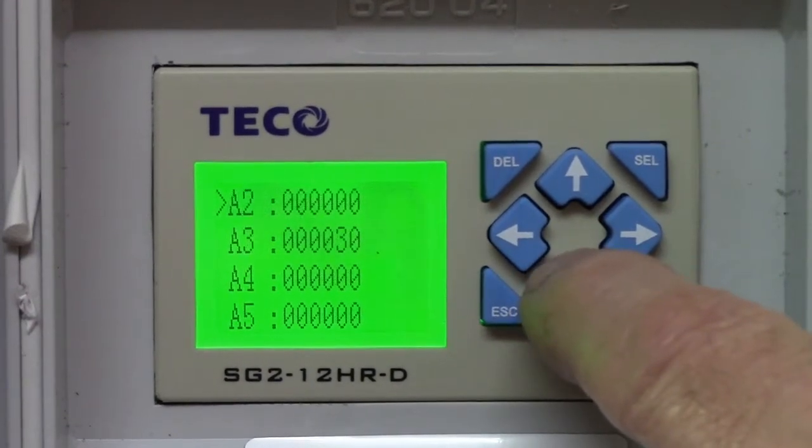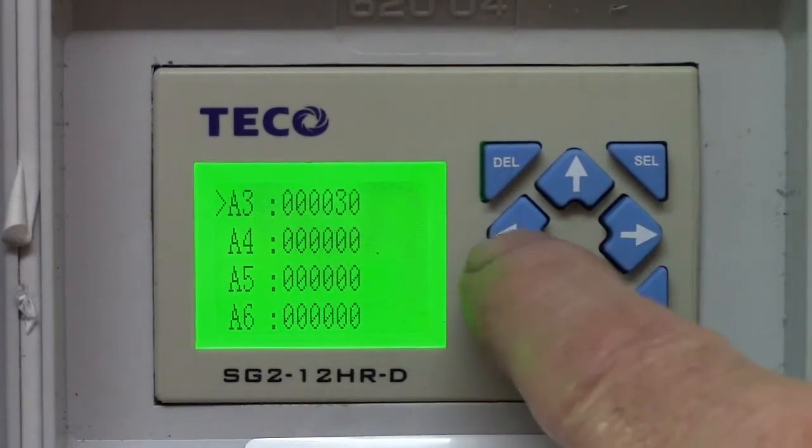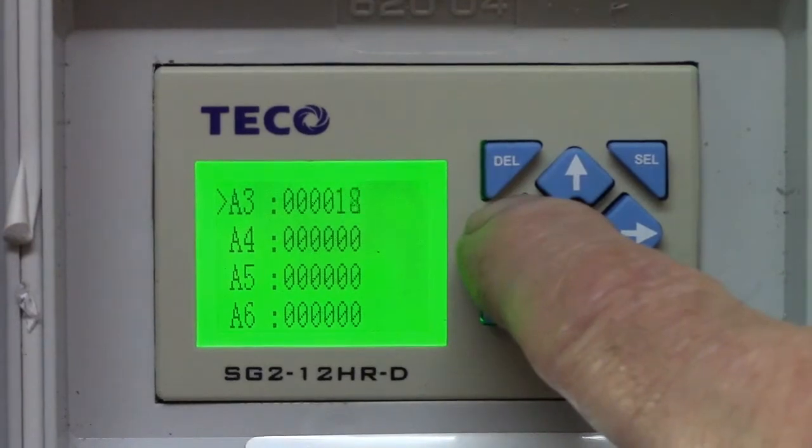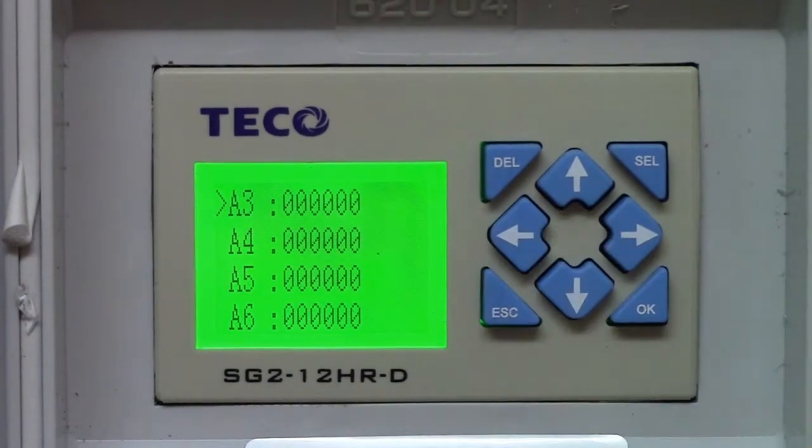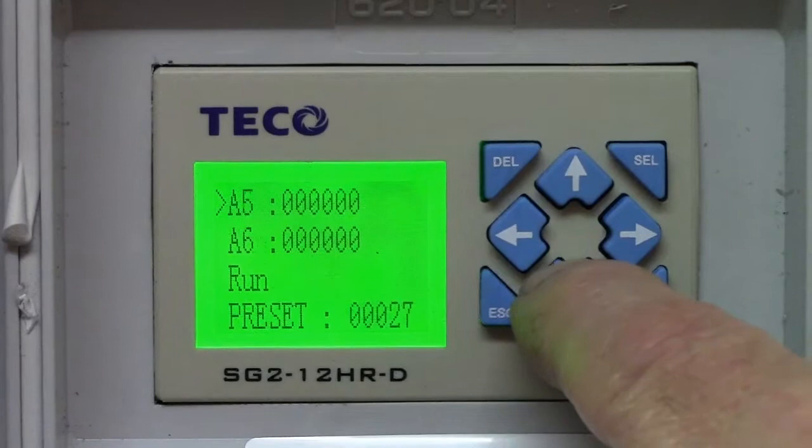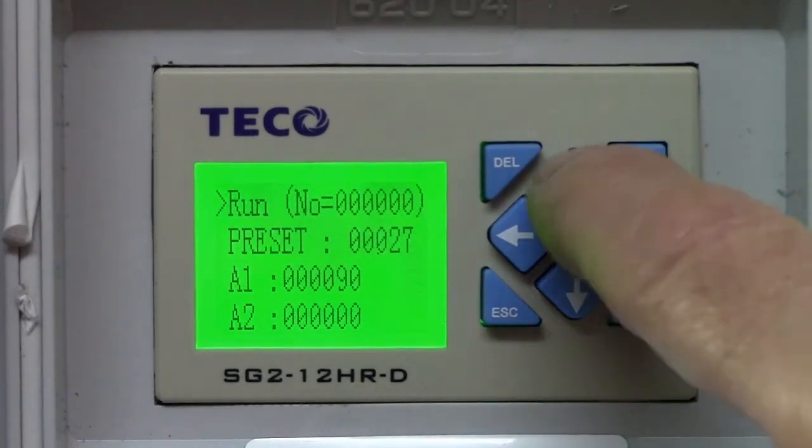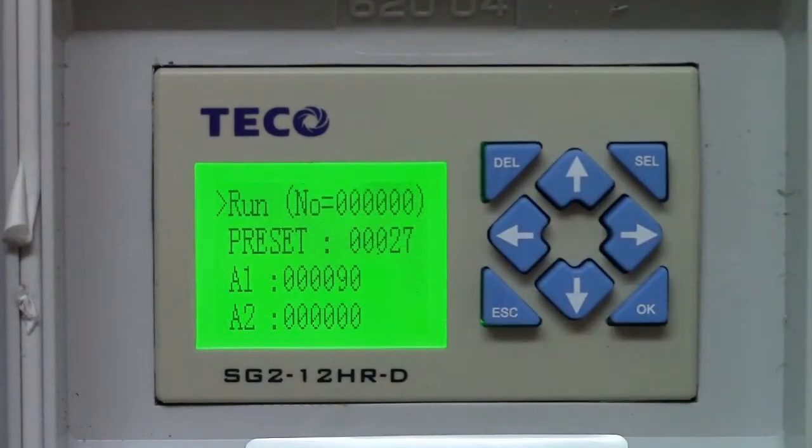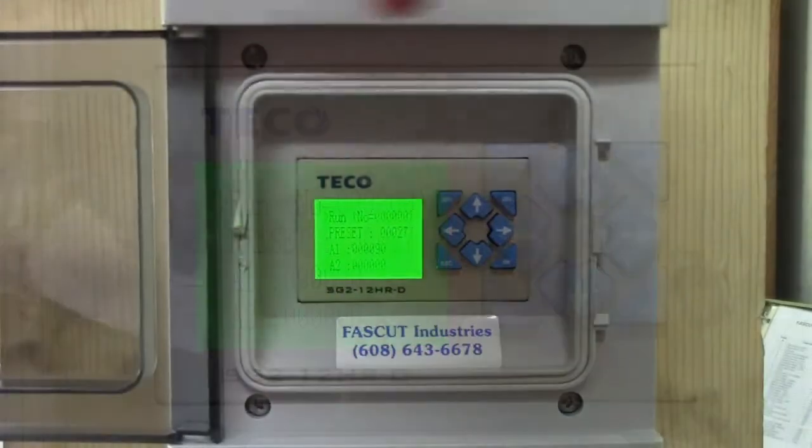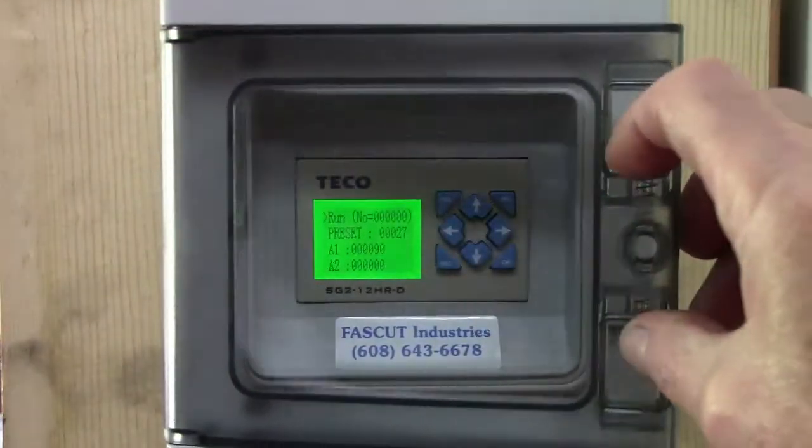Make sure the rest of the angles, A2 through A6, are at zero. Now you can close the door on the controller and hang it back on the hook at the side of the machine.